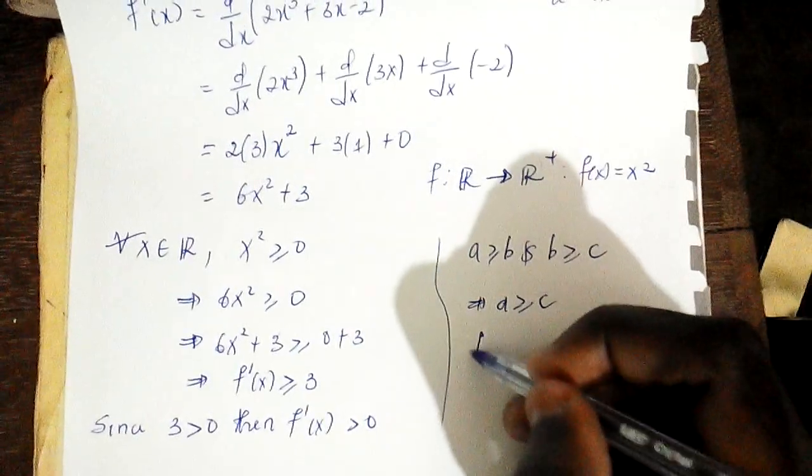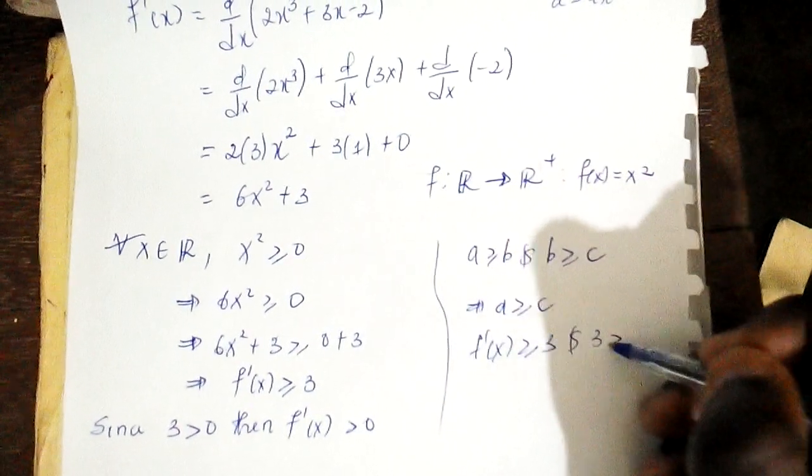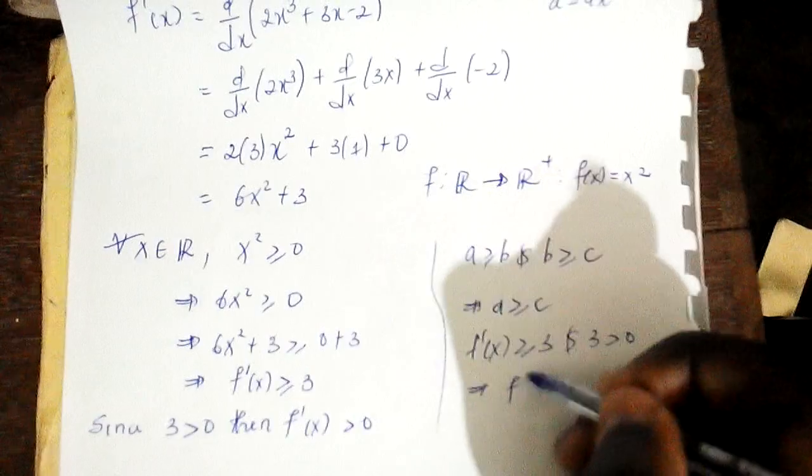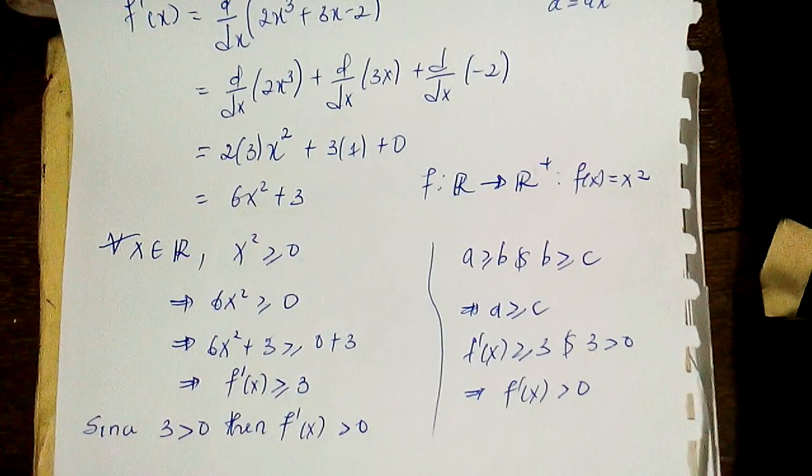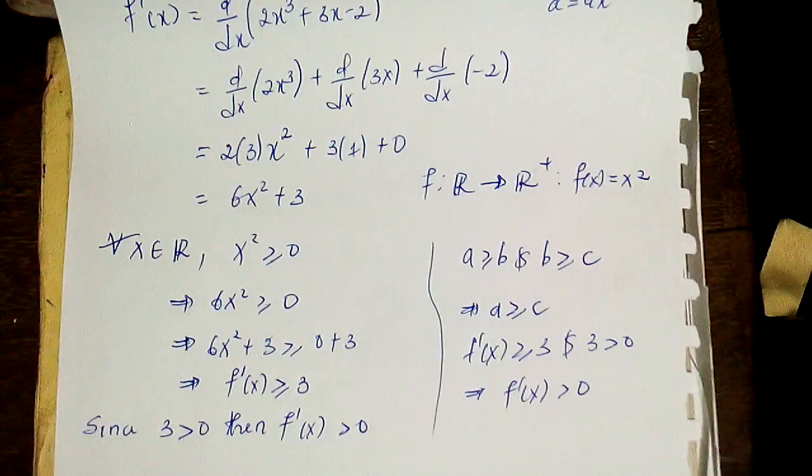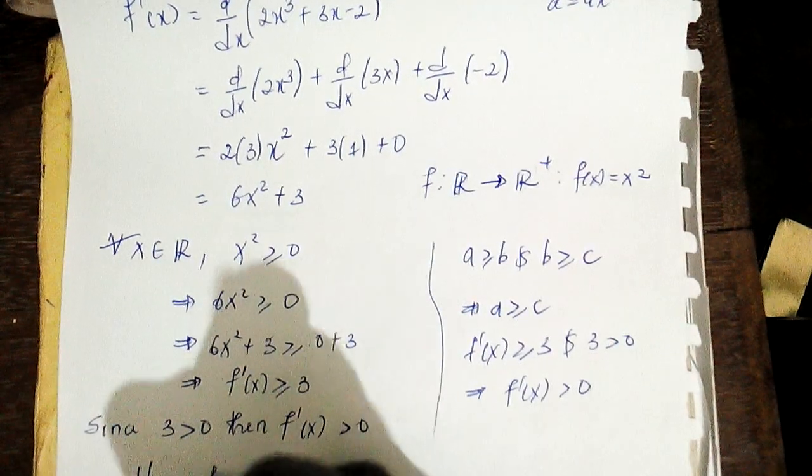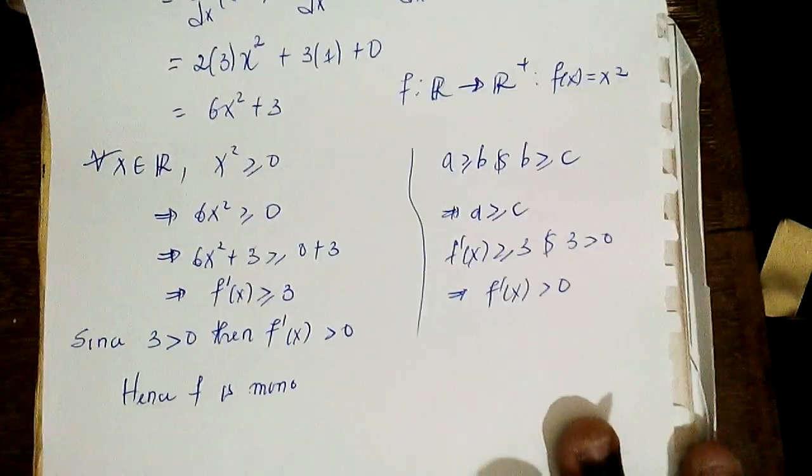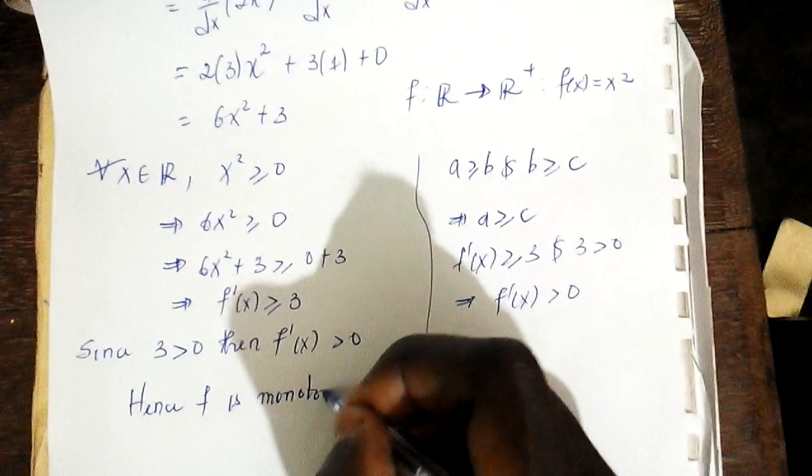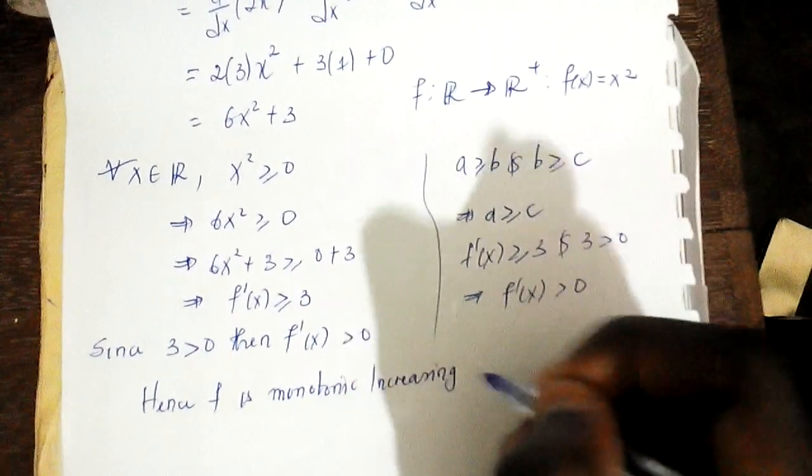That's the same thing here. We have f'(x) ≥ 3 and 3 > 0, therefore f'(x) > 0 strictly, because it cannot be equal to zero in this case. Hence, f is monotonic increasing as required.